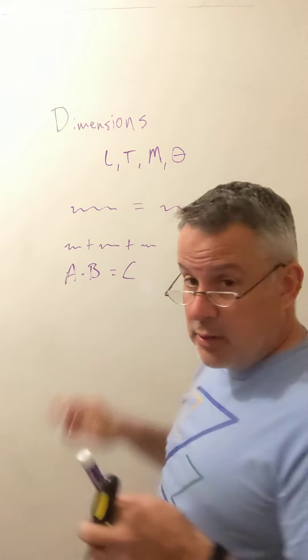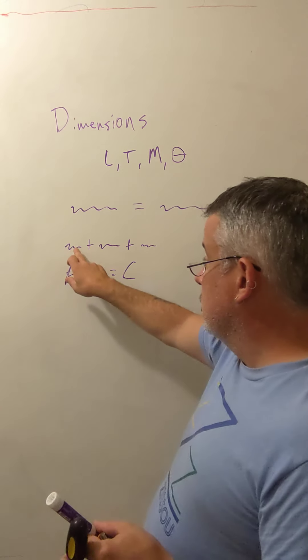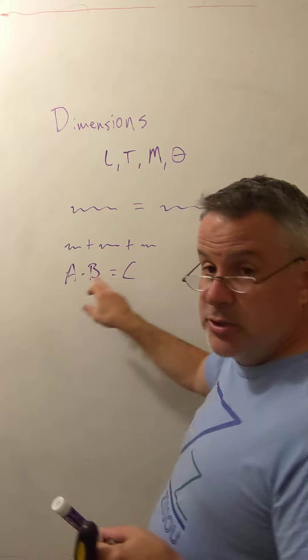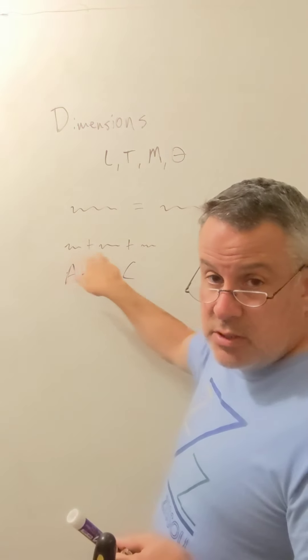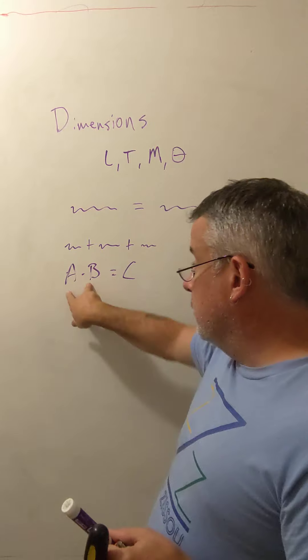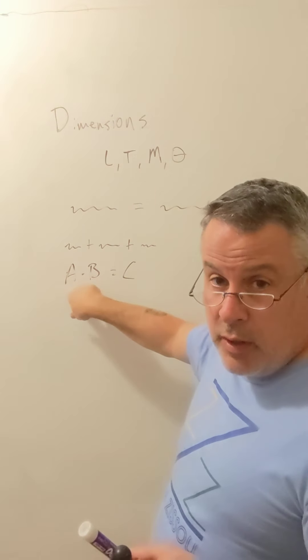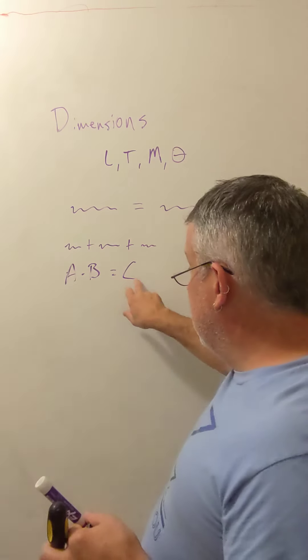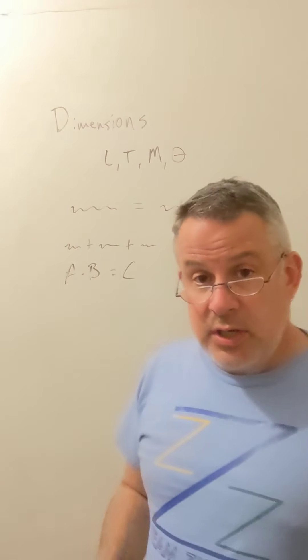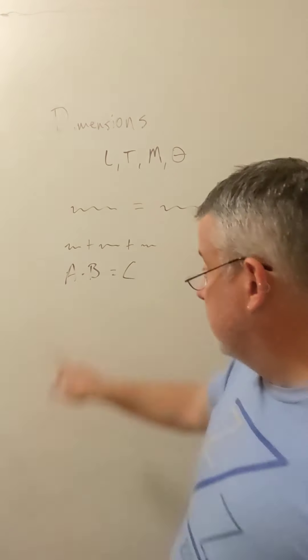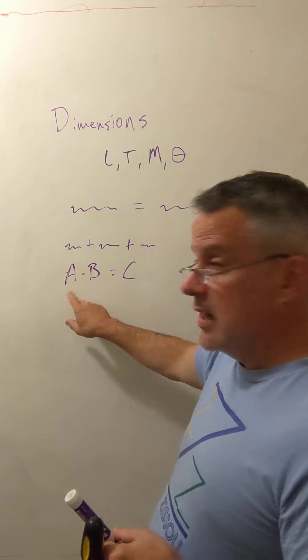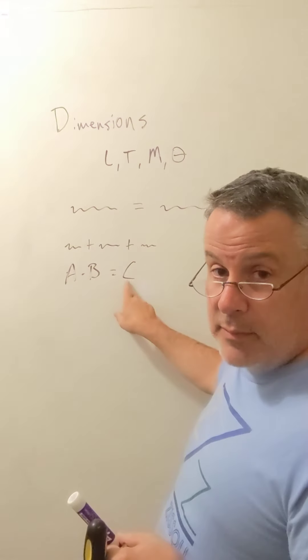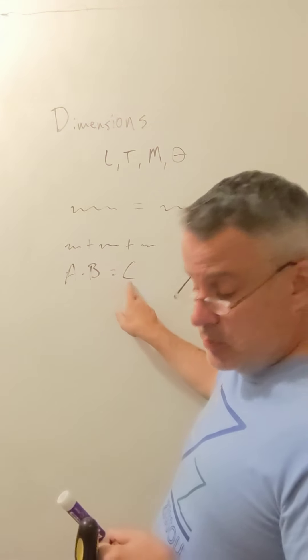If you're adding things together, they should have the same dimensions. So you could do length plus length plus length, but you couldn't do length plus time because the dimensions are not consistent for those. If you multiply two things together with different dimensions, then the product actually gains the product of both. So if this was length times time or length divided by time, this would be length times time or length divided by time as well.